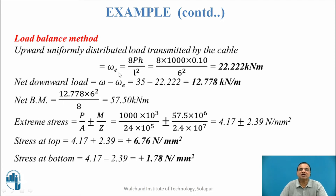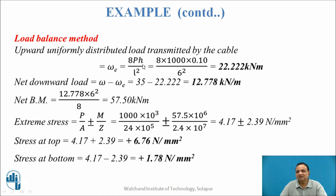The upward pressure developed, denoted WC, is given by WC into L squared upon 8 = P·H (bending moment), so WC = 8pH / L². Substituting the values gives 22.22 kN per meter as the upward load induced. The net downward load is therefore 35 minus 22.22, which is 12.778 kN per meter.